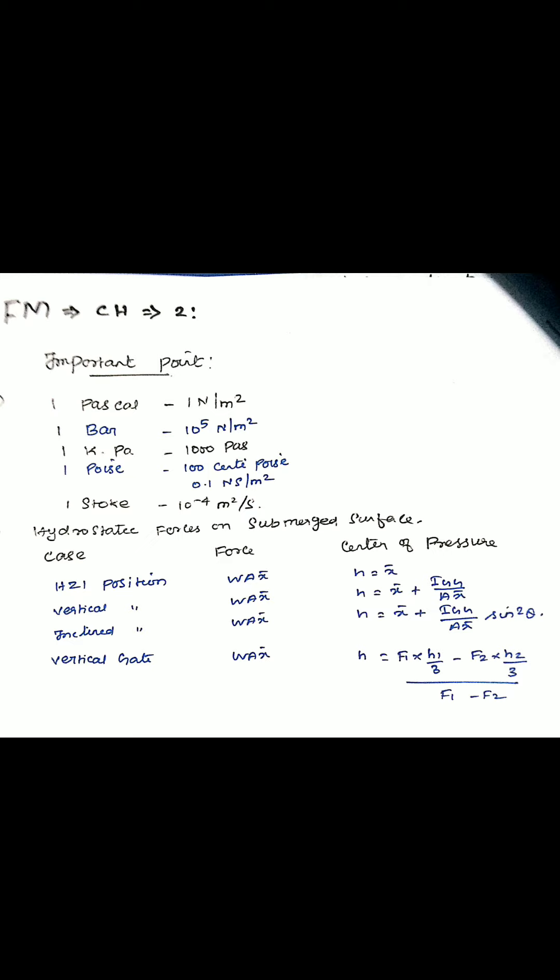Here we discuss some important points related to this chapter. One pascal is equal to one newton per meter square. One bar is equal to 10 to the power of 5 newton per meter square, or 10 to the power of 5 pascal. One kilo pascal is equal to thousand pascal. One poise is equal to hundred centipoise, or 1/10 of newton seconds per meter square.